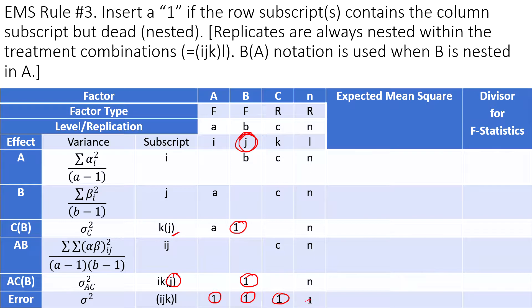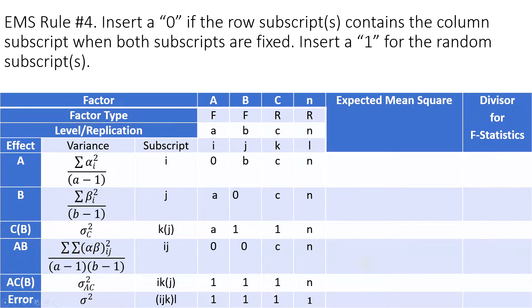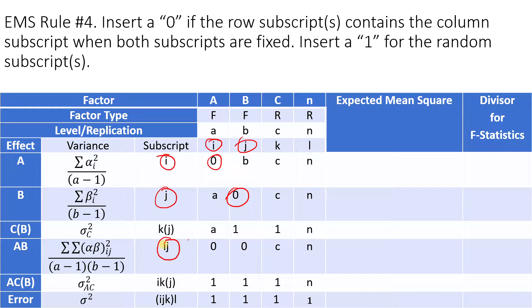Note: there is a typo in the table at this point. The next rule is: if the row subscript contains the column subscript and the factor is fixed, then type 0. For example, if row subscript contains column subscript I and it's a fixed factor, type 0; same for Z. However, if the row subscript contains the column subscript and the factor is random — for example IJKL contains L — type 1, because the replication is random. In summary: for a random subscript, enter 1; for a fixed subscript, enter 0.